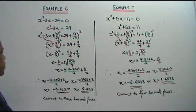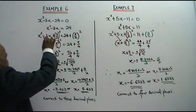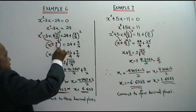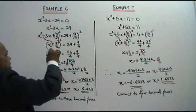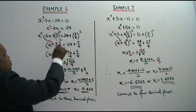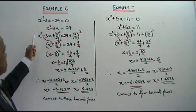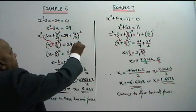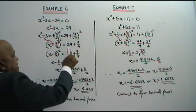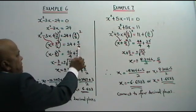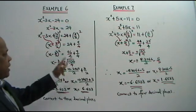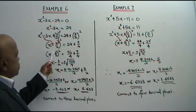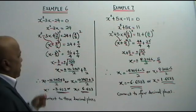We have completed the square. You see this side is negative, so you bring 3 over 2 down here. In this bracket you get x minus 3 over 2, squared, which equals to 24 plus 9 over 4. And 24 is 96 over 4 — multiply by 4. So you get 105 over 4. So x minus 3 over 2, squared, equals to 105 over 4.